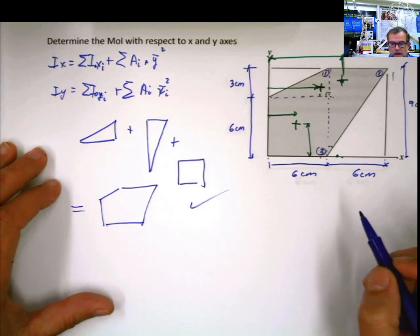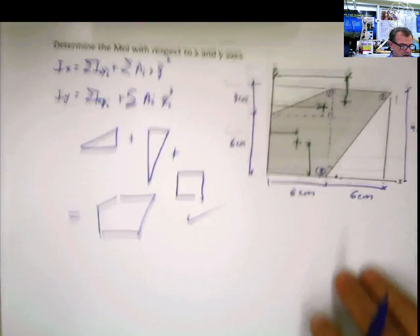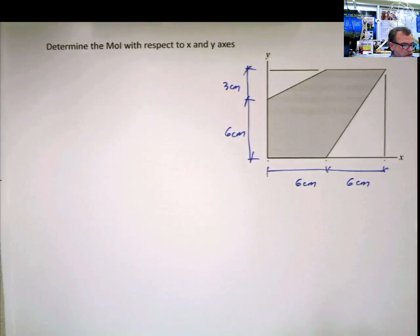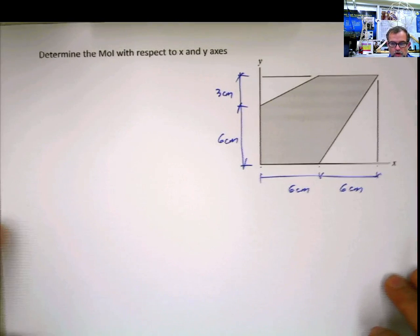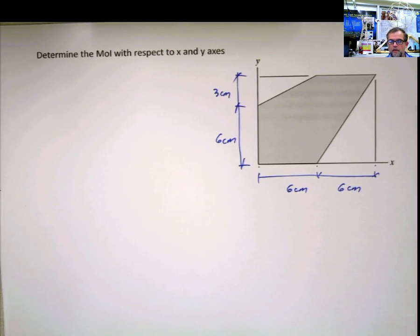Now, just for fun, I'm going to approach the same problem. But I'm going to do it a little bit different. So I can show you that no matter what way you decide to divide the structure, or the shape, or the area, the moment of inertia should be the same.